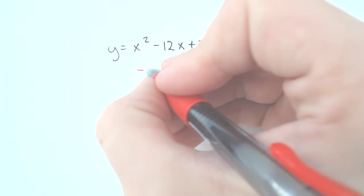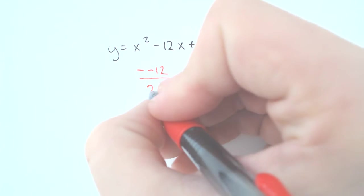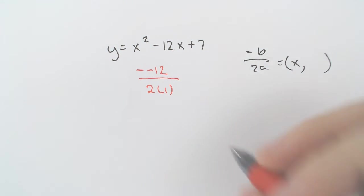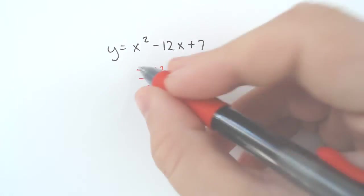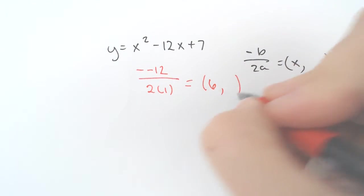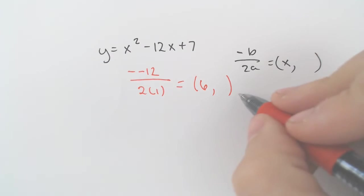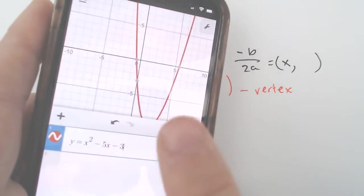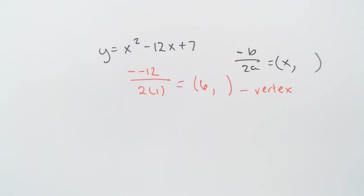If we did negative negative 12 over 2 times 1, we would end up with 12 over 2, which is 6. And then you could plug that back in. This is going to get us our vertex, which of course you could visually look and be like, hey, look, graph. This is not the graph, but there's the vertex. You could do that.